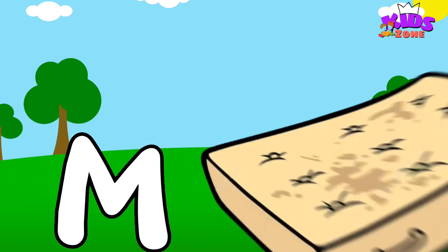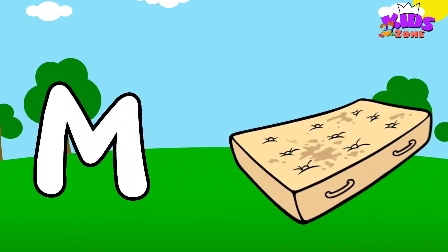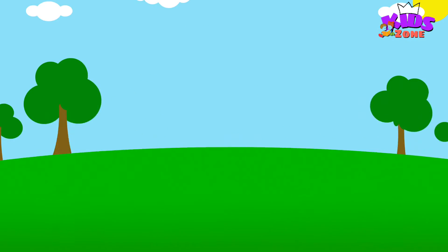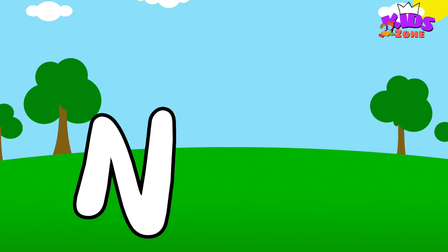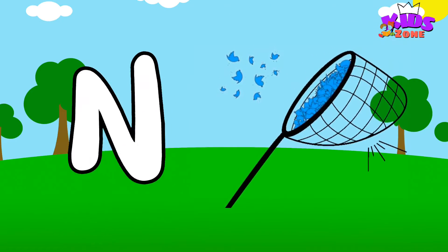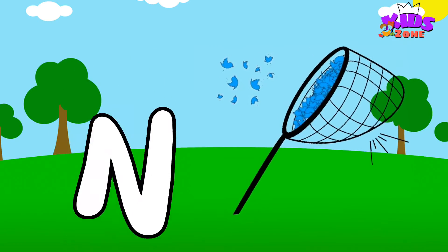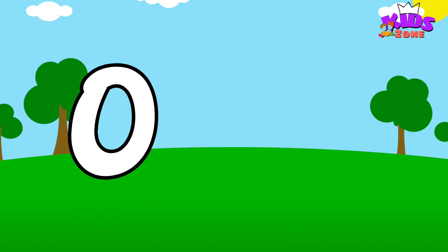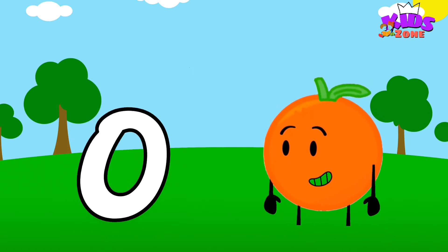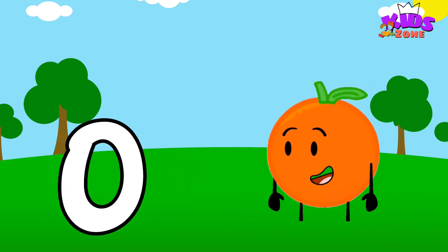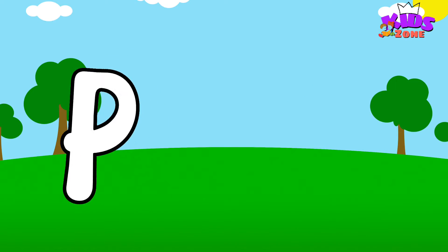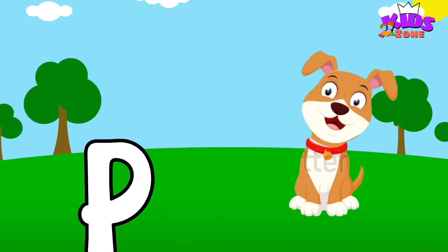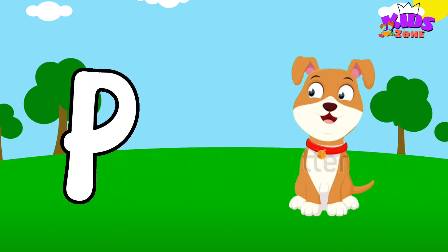M is for Mat. M-M-Mat. N is for Net. N-N-Net. O is for Orange. O-O-Orange. P is for Pet. P-P-Pet.